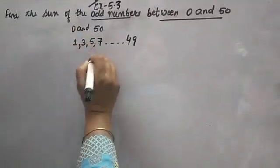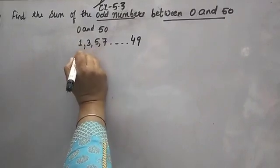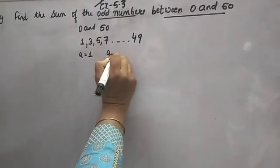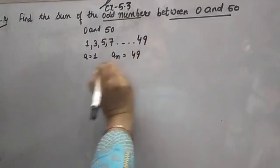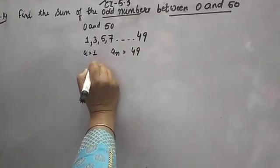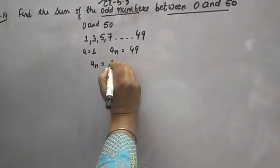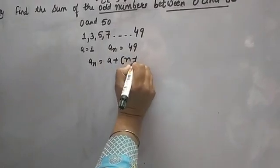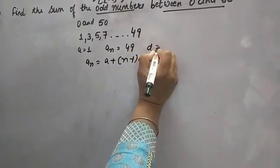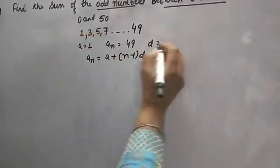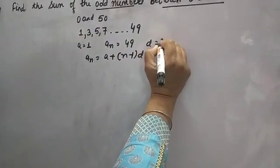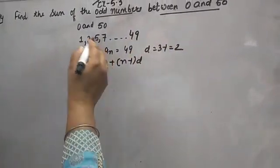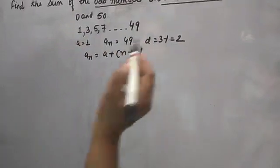Now let's find N first. The first term is 1 and the last term is 49. This sequence has N terms. The formula is a + (N minus 1) into d. The common difference d is 3 minus 1 = 2, also 5 minus 3 = 2, and 7 minus 5 = 2, so d = 2.